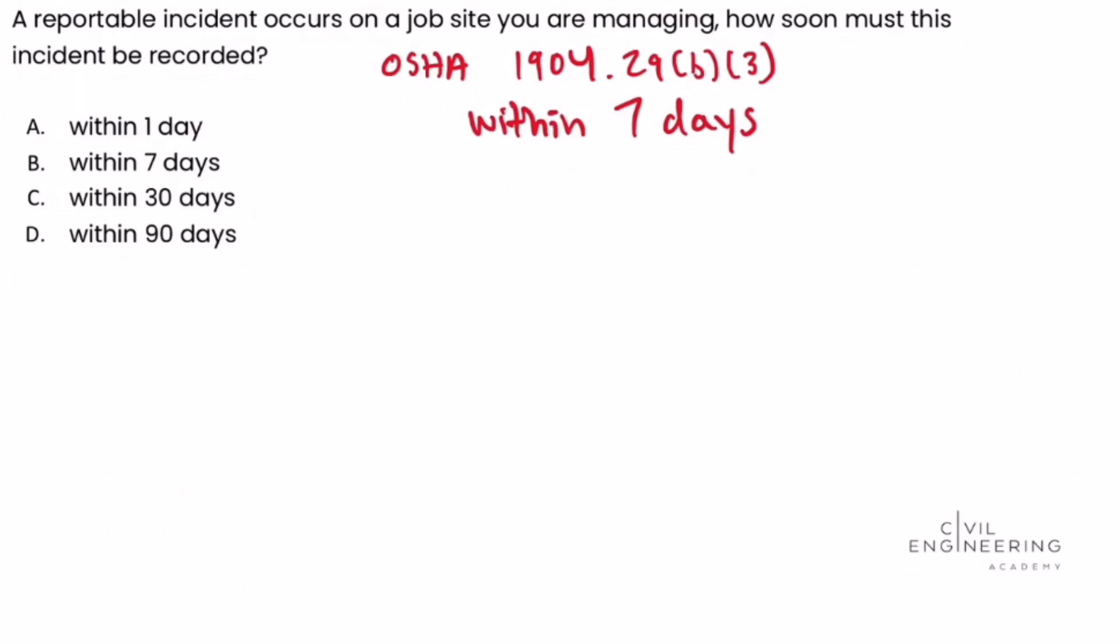If we look at the answer choices, we see that answer choice B is the option for within seven days, and we've solved this problem successfully.